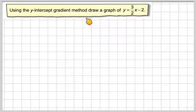Using the y-intercept gradient method, draw a graph of y is equal to 3 over 2x minus 2. So we've got y is equal to 3 over 2x minus 2.